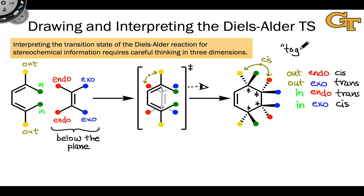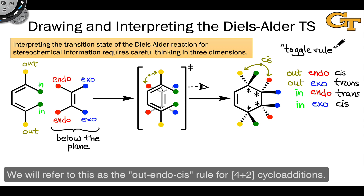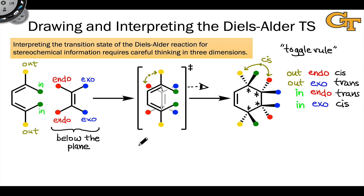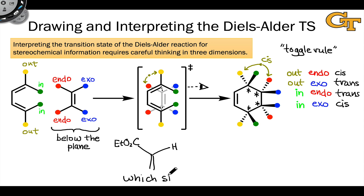This toggle rule can be helpful for determining the relative positions of groups in a cyclohexene product, and it works regardless of the complexity of the starting materials, since all groups in the diene and dienophile can be classified as either out or in, and endo or exo. For a dienophile with two different groups on either side of the double bond, such as an unsaturated ester with an H opposite the ester, the question becomes which side goes endo as the dienophile approaches the diene. We'll answer that on the next slide by introducing the endo rule.